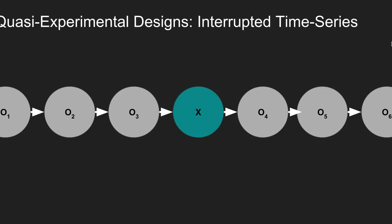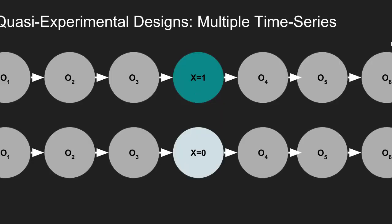Another type of quasi-experimental design often used in social research is the interrupted time series design, where the researcher makes several measurements before and after exposure to a treatment X. This is also done in a multiple time series, where two or more groups are followed at several measurement points before and after treatment. Observed changes after the treatment exposure can be hypothesized to be due to manipulation, while the control group should show no changes in measurements taken after the treatment.